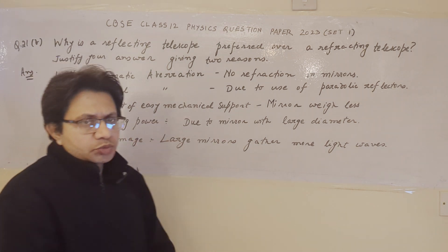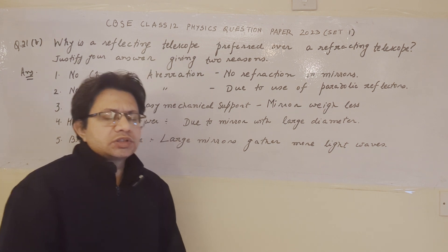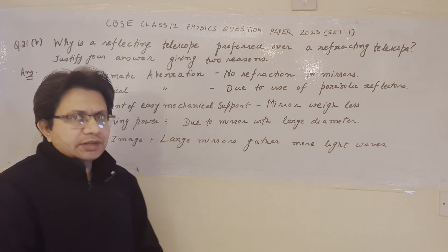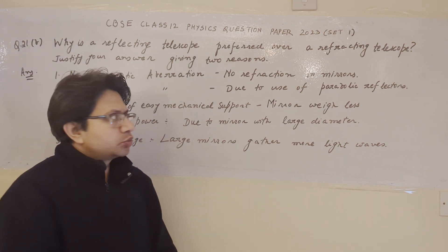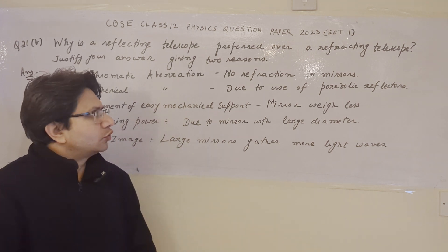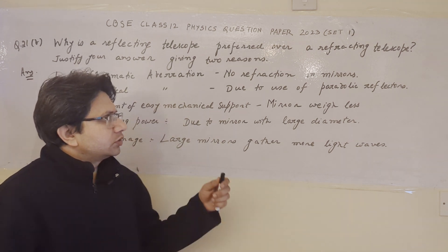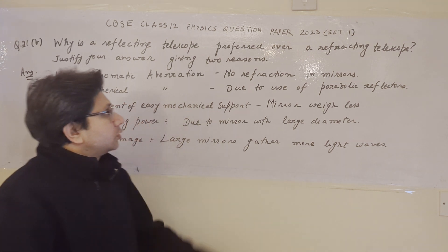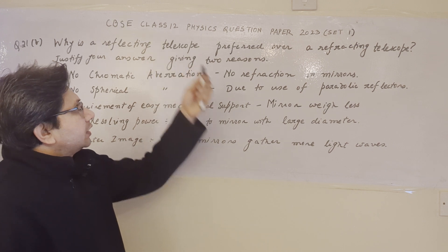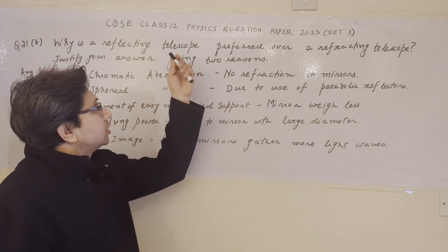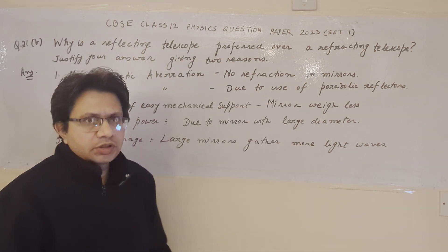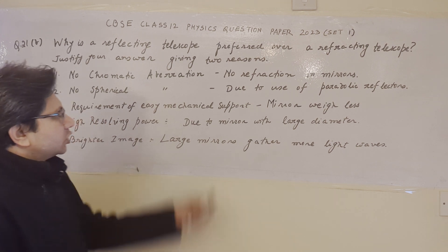There are two types of telescopes. The first one is the refracting type of telescope and the second one is the reflecting type of telescope. We have to write down any two of the reasons by which the reflecting telescope is preferred over the refracting type of telescope.